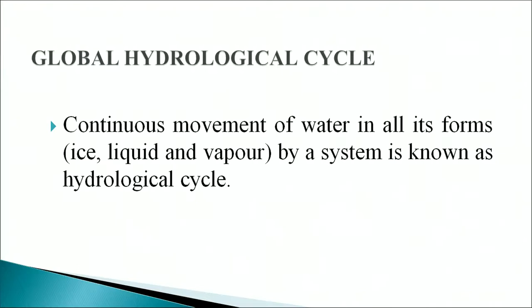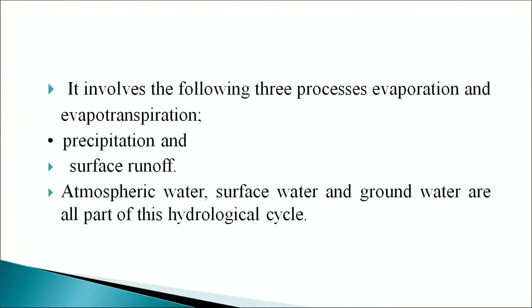Now we will look at the global hydrological cycle. The continuous movement of water in all its forms — whether ice, liquid, or vapor — through a system is known as the hydrological cycle. It involves three processes: evaporation and evapotranspiration, precipitation, and surface runoff. Atmospheric water, surface water, and groundwater are all parts of this hydrological cycle.